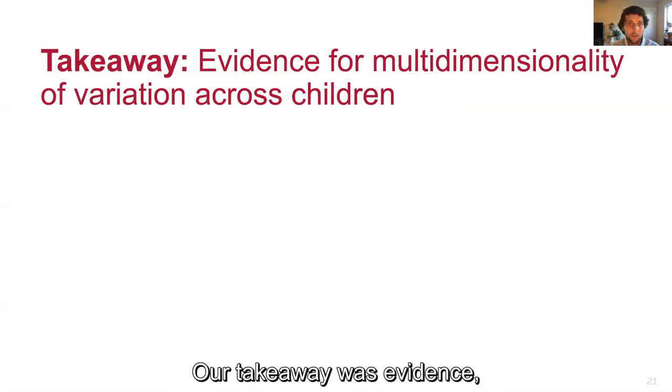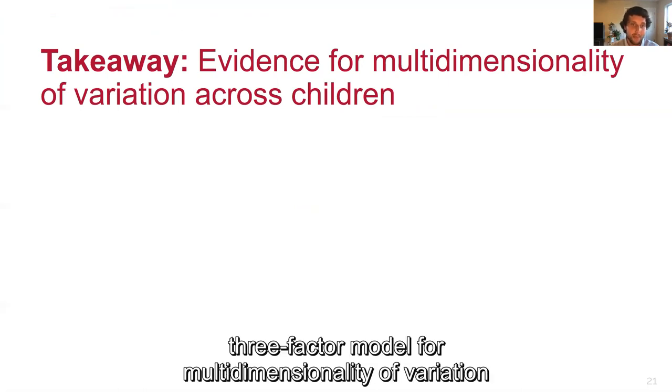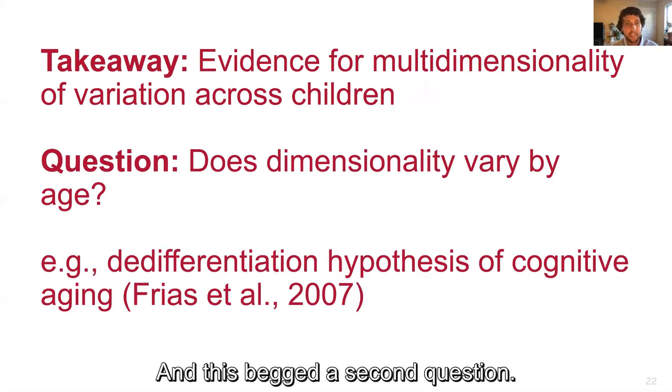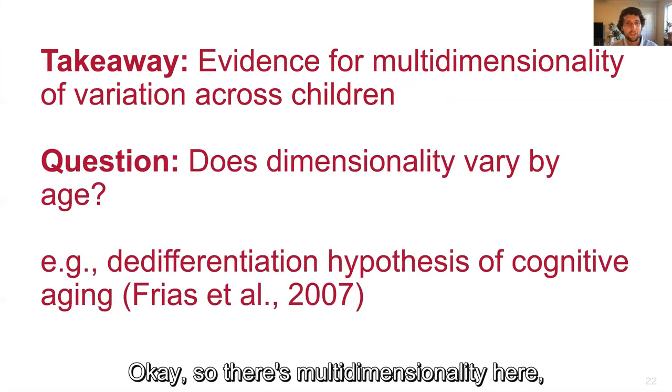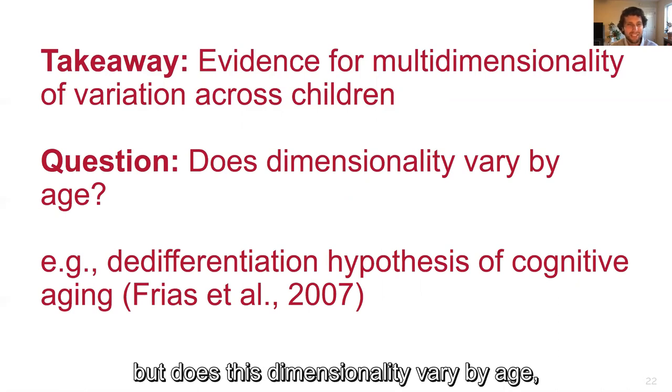Our takeaway was evidence of a three-factor model for multi-dimensionality of variation across children in development. And this begs a second question: so there's multi-dimensionality here, but does this dimensionality vary by age?